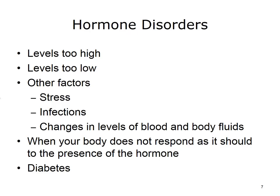Hormones are powerful. Having too little or too much of a hormone causes various hormone disorders. The level of hormones secreted into our bloodstream can be affected by factors such as stress, infections, and changes in the levels of blood fluids, causing disturbances such as electrolyte imbalances. When your body does not respond to hormones the way it is supposed to, hormone diseases can occur. One of the most common endocrine diseases in the United States is diabetes, which we will discuss when we cover the pancreas.